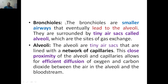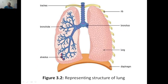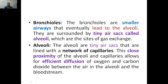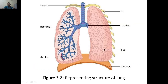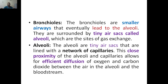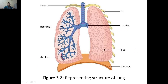Bronchioles are the smaller airways — subdivisions coming from the bronchi — that eventually lead to the alveoli. They are surrounded by tiny air sacs which are called alveoli. These tiny air sacs are the alveoli, and the alveoli are the sites of gas exchange. The red indication you see here shows oxygen being fed into the bloodstream.